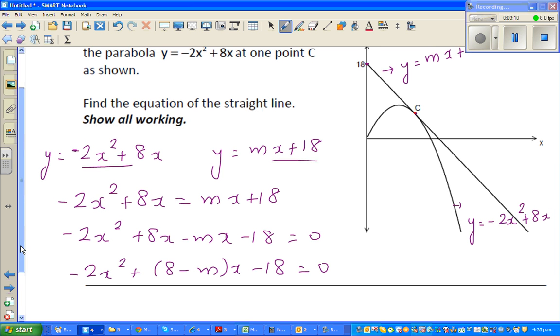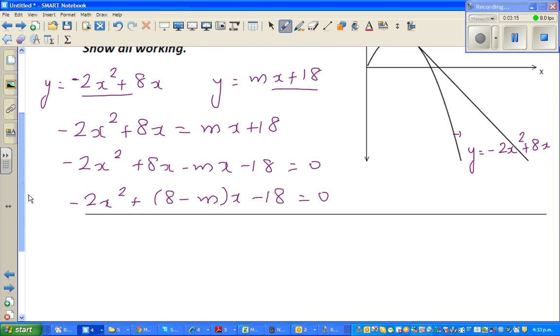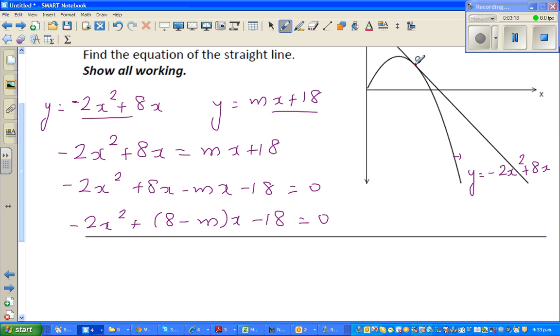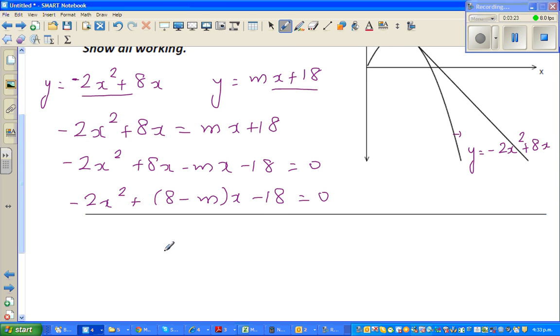Now from here we have to use one very important result which is, now there is only one point of intersection. As there is only one point of intersection, the b squared minus 4ac will become 0. So we can, let me write that, b squared minus 4ac is equal to 0.